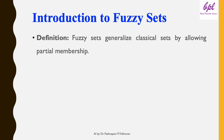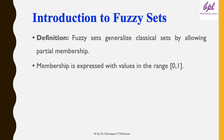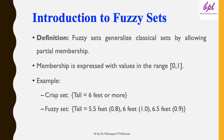A fuzzy set is a collection of elements with varying degrees of membership, represented by a membership function. Membership is expressed with values in the range 0 to 1. In a crisp set, the definition is absolute and binary — an element either belongs to the set or it doesn't. There is no middle ground.